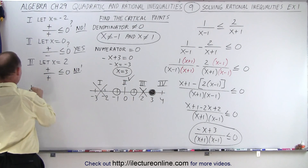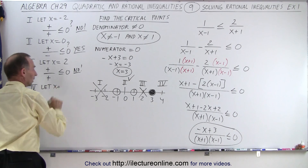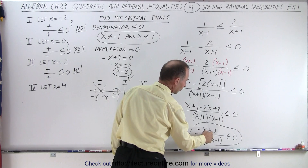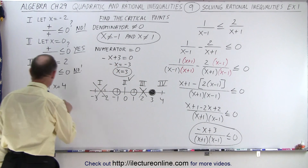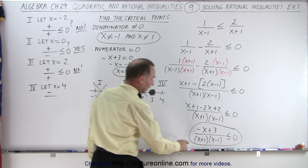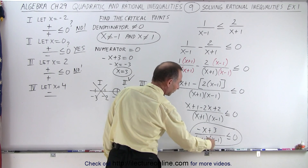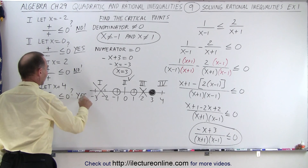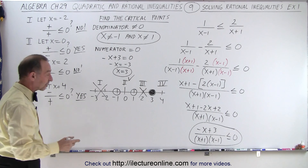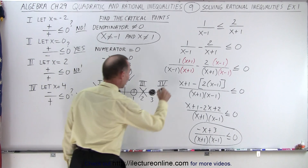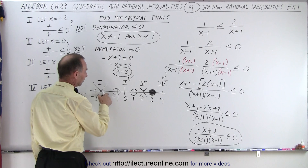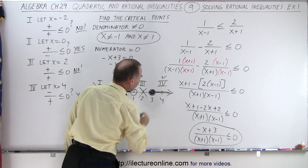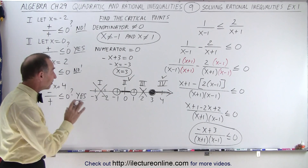For region four, let x equal four. Negative four plus three is negative, so the numerator is negative. In the denominator, four plus one times four minus one is five times three — both positive, giving a positive denominator. Is that less than or equal to zero? Yes — because the numerator is negative, the fraction is less than zero. So region four is valid. Regions one and three are not valid, but regions two and four are.